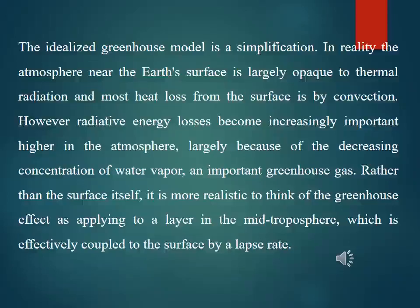The idealized greenhouse model is a simplification. In reality, the atmosphere near the Earth's surface is largely opaque to thermal radiation and most heat loss from the surface is by convection. However, radiative energy losses become increasingly important higher in the atmosphere, largely because of the decreasing concentration of water vapor. Rather than the surface itself, it is more realistic to think of the greenhouse effect as applying to a layer in the mid-troposphere, which is effectively coupled to the surface by a lapse rate.